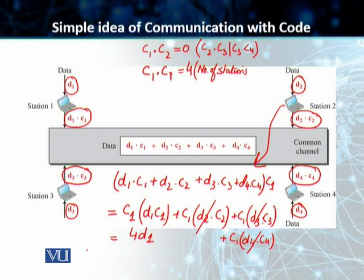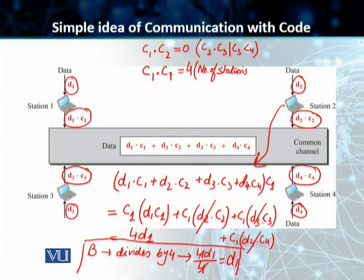The second step is station 2 actually divides this by four, and we get 4D1 divided by four, which equals D1. And that's how station 2 extracts the data sent to it by station 1.